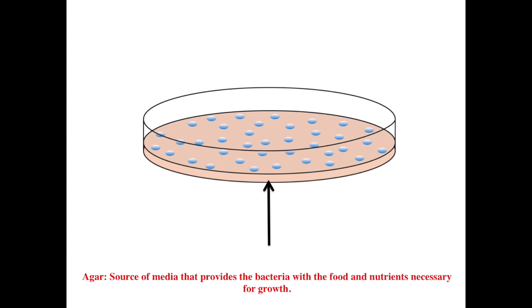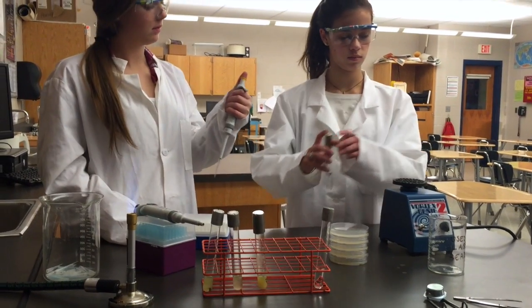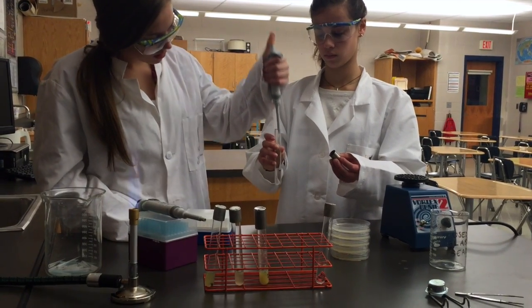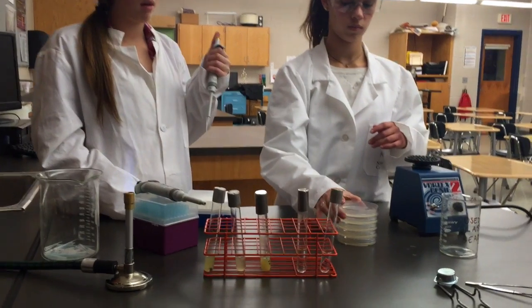Similar to B-transfers and serial dilutions, use the members in your group to properly execute this procedure. One student should retrieve the 10-4 dilution tube and briefly vortex it for 3 seconds. Another student can get a tip using the P200 pipette and retrieve 100 microliters from the vortexed 10-4 dilution tube.